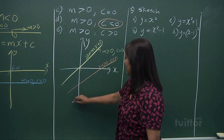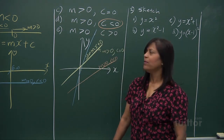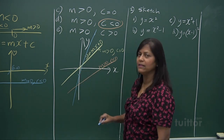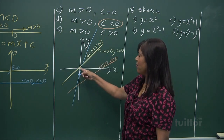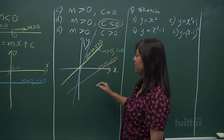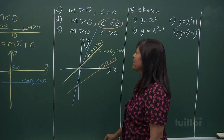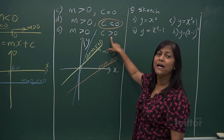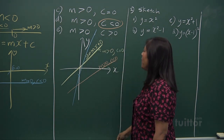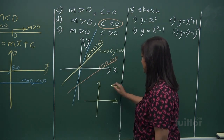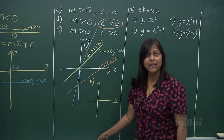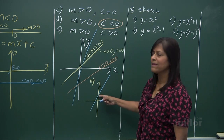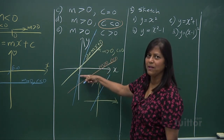Let's do another one. For example, if I want to draw a steep graph — it is a positive gradient increasing very steeply, but your c is less than 0, it is below the origin (0, 0). All these are positive gradient. Now, if m is greater than 0 and c is greater than 0 — above 0 — it is a positive gradient with c positive, cutting above the x-axis. Unlike where c is less than 0, which is below the x-axis.